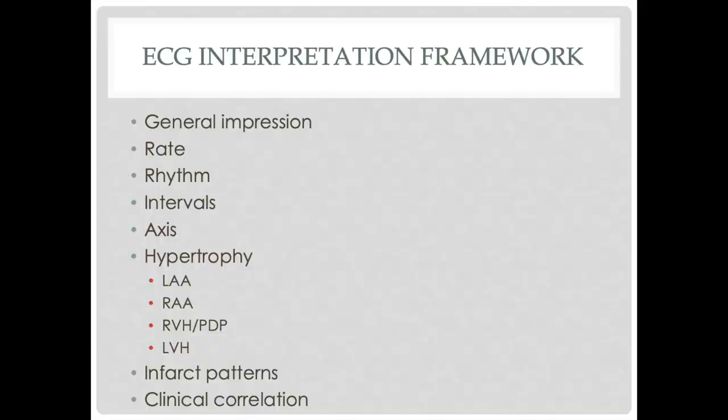Following axis, we look at hypertrophy — what I'm really looking for is chamber enlargement. There are four chambers: I look for signs of left atrial abnormality, right atrial abnormality, left ventricular hypertrophy, and right ventricular hypertrophy. Right ventricular hypertrophy is almost impossible to diagnose from an EKG, so I shorten down the criteria and increase my hit rate by looking for pulmonary disease pattern instead.